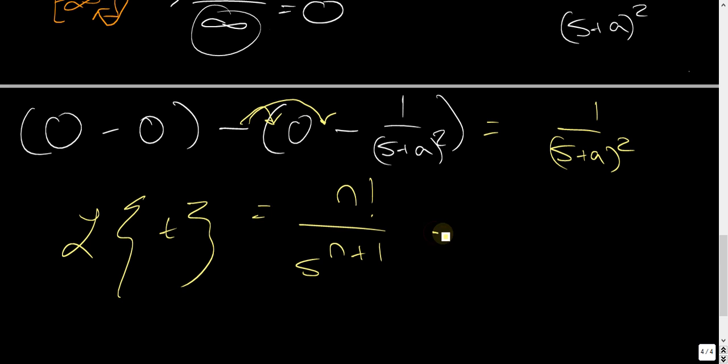Which that will give us, if we take the integral of that T, that'll give us one over S squared, which we kind of have that here, but not really.